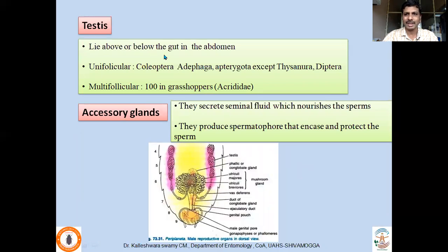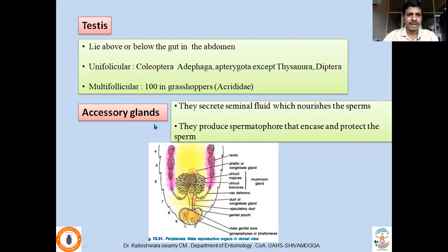Testes lie above or below the gut in the abdomen and may extend towards almost all anterior abdominal segments. The testicular follicles inside the testes may be unifollicular — only one follicle, like in Coleoptera Adephaga, Heteroptera except Thysanura, and Diptera — or multifollicular, with up to 100 follicles in grasshoppers. In cockroaches the accessory glands are modified into mushroom-like structures called mushroom glands.